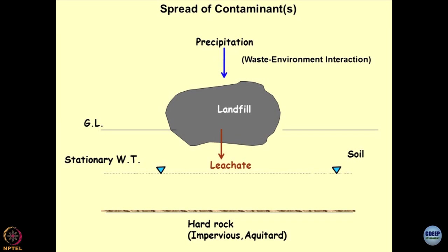Naturally occurring geomaterials are the soils and rocks; manmade geomaterials are the ones I have stacked over there. Why geomaterials? Everything has come out of the geos — the earth. All industrial byproducts come out of mining, processing, and stacking, their linkages from the earth. We have two situations: manmade and natural geomaterials, all getting influenced by the environment.